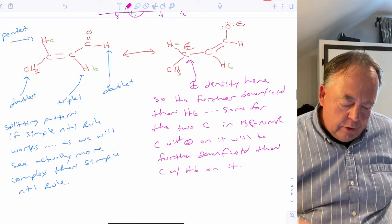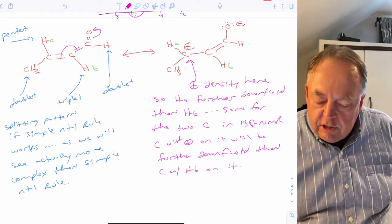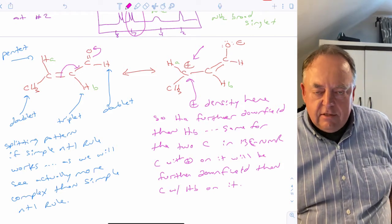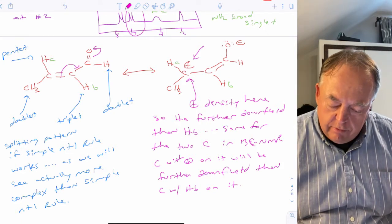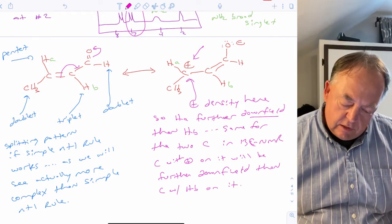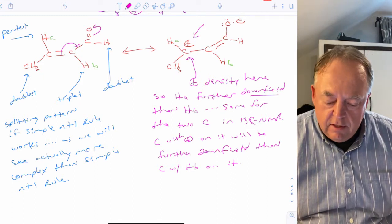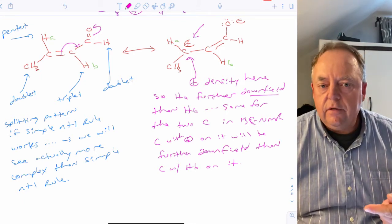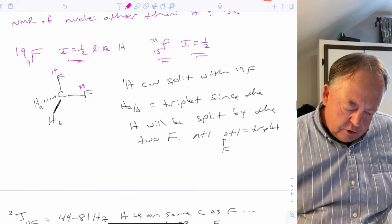Something similar is seen in conjugated systems. Moving the pi electrons toward the oxygen generates positive charge density on a specific carbon. That positive charge density deshields the attached proton, sending it to a higher chemical shift. So the hydrogen on carbon A would be further downfield than the hydrogen on carbon B, and this is also observable in C13 NMR.